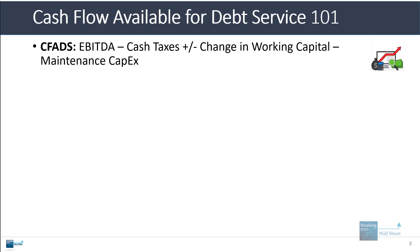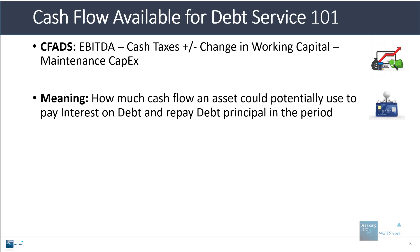Cash flow available for debt service in project finance is defined as EBITDA minus the cash taxes, plus or minus the change in working capital, minus the maintenance CapEx. It tells you how much cash flow an asset could potentially use to pay interest on debt and also repay debt principal in the period.